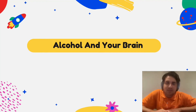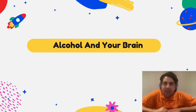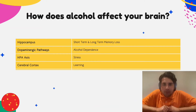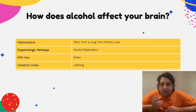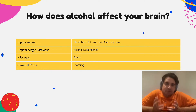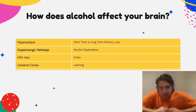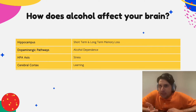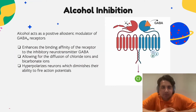Hi everyone, today we are going to discuss the impacts of alcohol on your brain. Specifically, we will discuss the impact of alcohol on your brain's physiology and how it changes your cognitive functioning. Alcohol has a substantial impact on all the different parts of your brain as well as every other organ system in your body, but for this introductory video we will focus on the hippocampus, the dopaminergic pathways, the HPA axis, and the cerebral cortex.